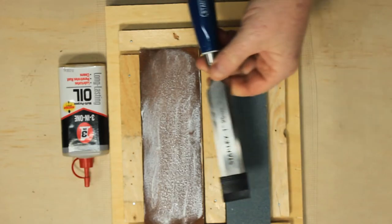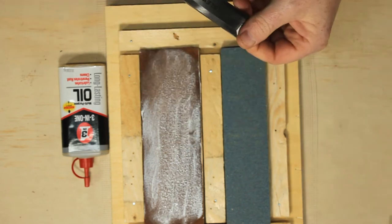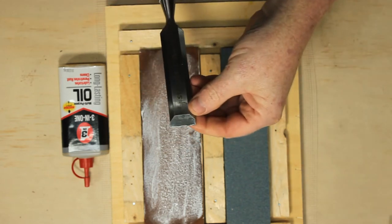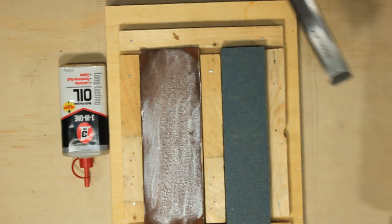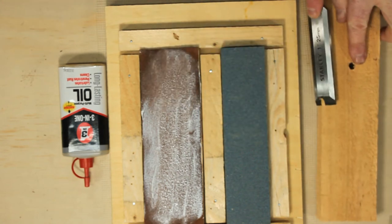I'm going to hone the edge of this brand new Stanley chisel. These chisels are coated in a rust preventative lacquer, which also covers the cutting edge. They will cut in their current state, but not very well.